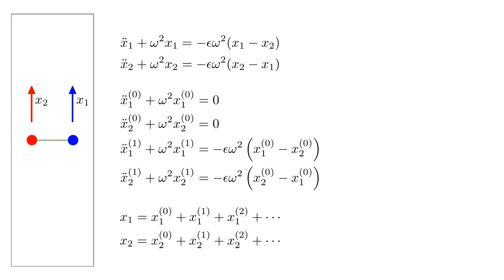Finally, we form our approximate solution as the sum of the zeroth-order solution and all computed corrections. In principle, by calculating enough corrections, we can make this approximation arbitrarily close to the exact solution. In this way, perturbation theory replaces the single original problem that requires simultaneous solution of all unknowns, with a series of simpler tractable problems that can be solved one after another and combined until a desired level of accuracy is achieved.